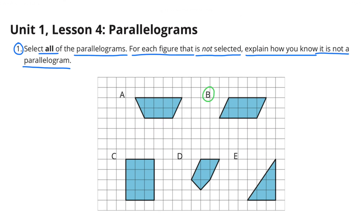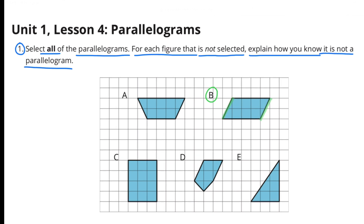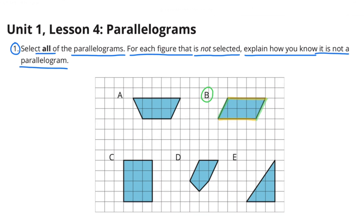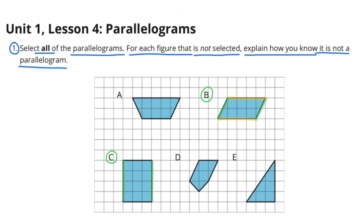Figure B is a parallelogram. Opposite sides are parallel and opposite sides are the same length. Figure C is also a parallelogram, with opposite sides being the same length and opposite sides being parallel.